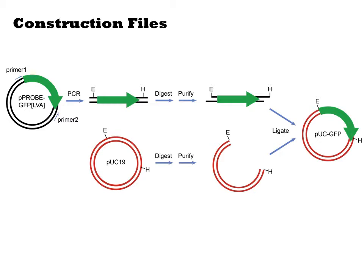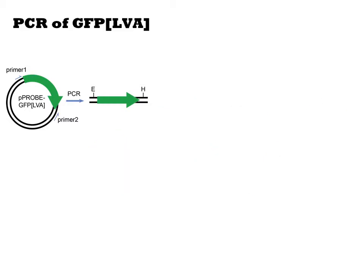A construction file describes lab operations for fabricating a genetic construct. In this diagram, we illustrate the various steps of the cloning experiment. First, we'll do a PCR with two oligonucleotides named Primer1 and Primer2 using plasmid DNA called P-probe GFP LVA as template. This plasmid encodes the GFP gene in green that we wish to move to another plasmid.